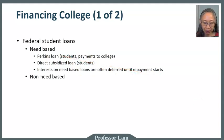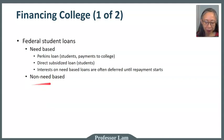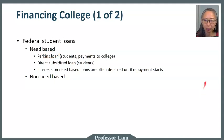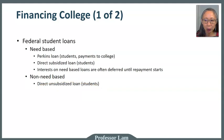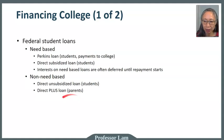There are also non-need-based student loans. The name is very misleading because most people take out loans because they need the loan. But what this means is that the borrower does not qualify under the income criteria for Perkins loans and direct subsidized loans. The first type are direct unsubsidized loans, which are loans to students. There are also direct PLUS loans, which are loans to the parents, not the student.